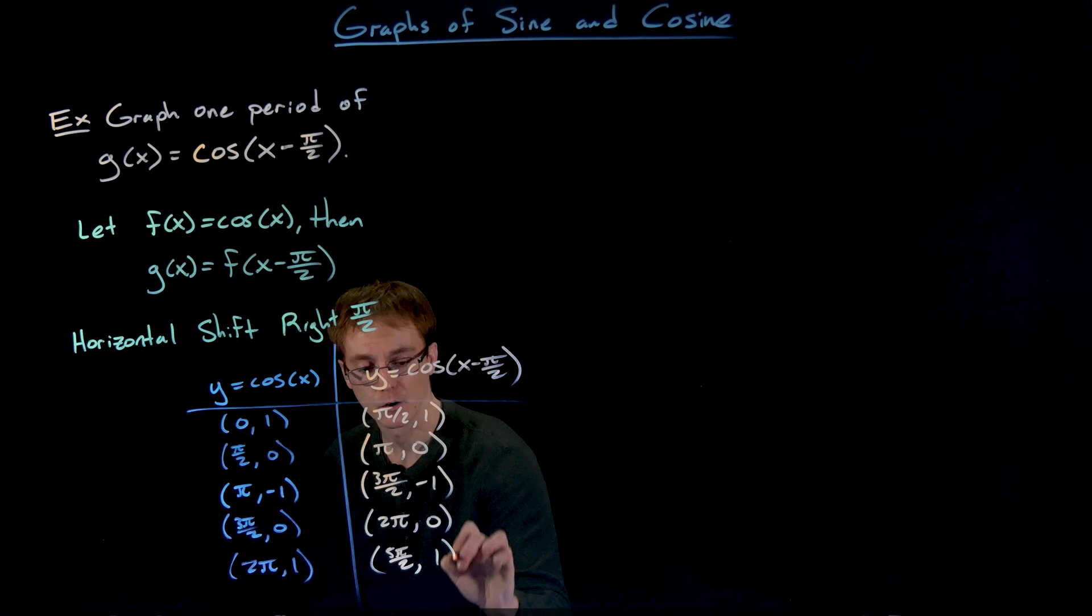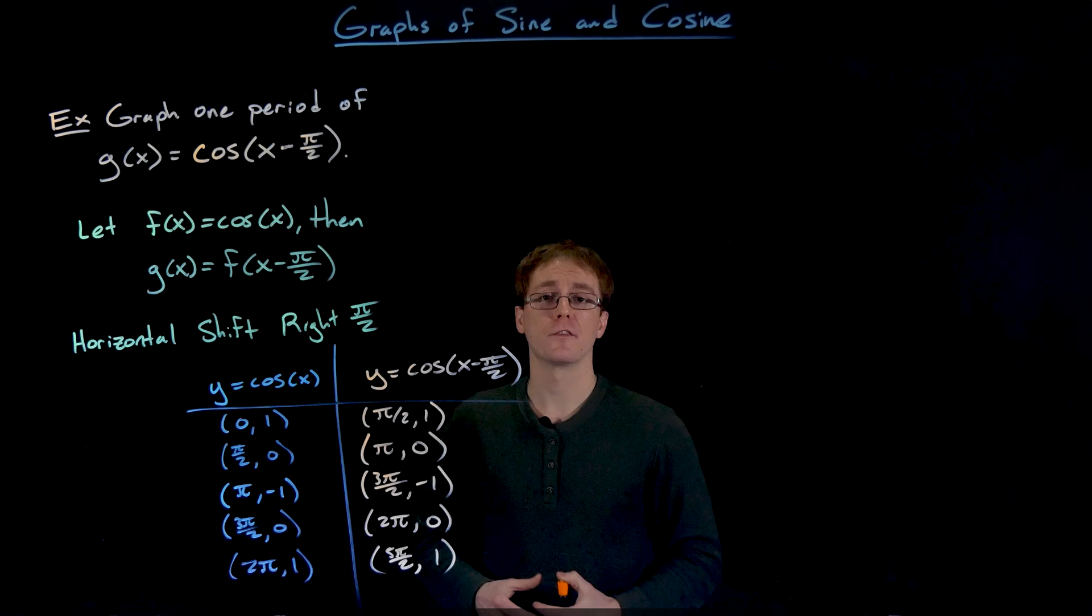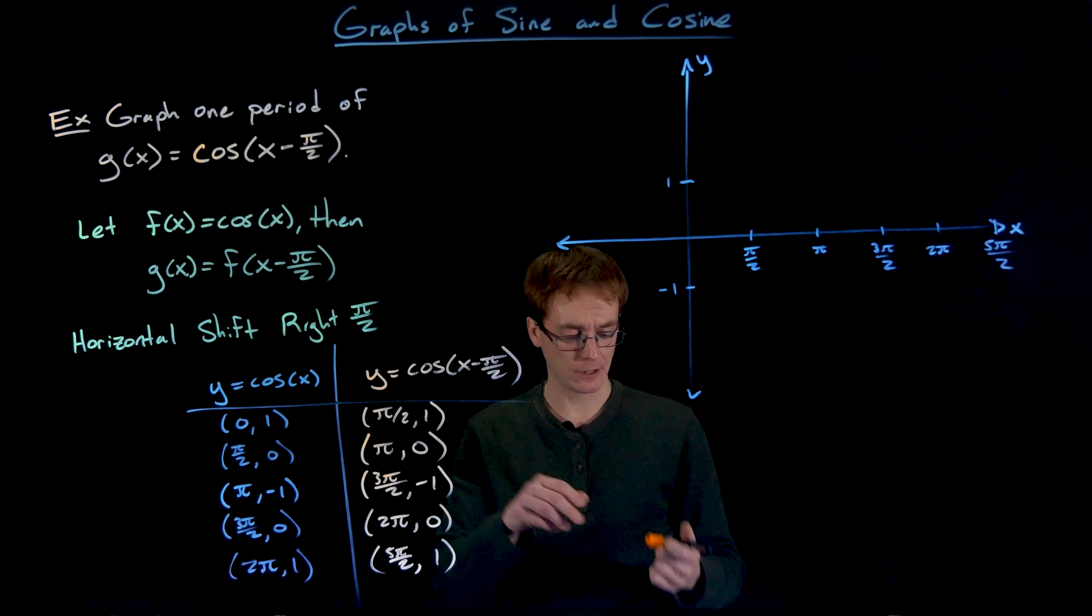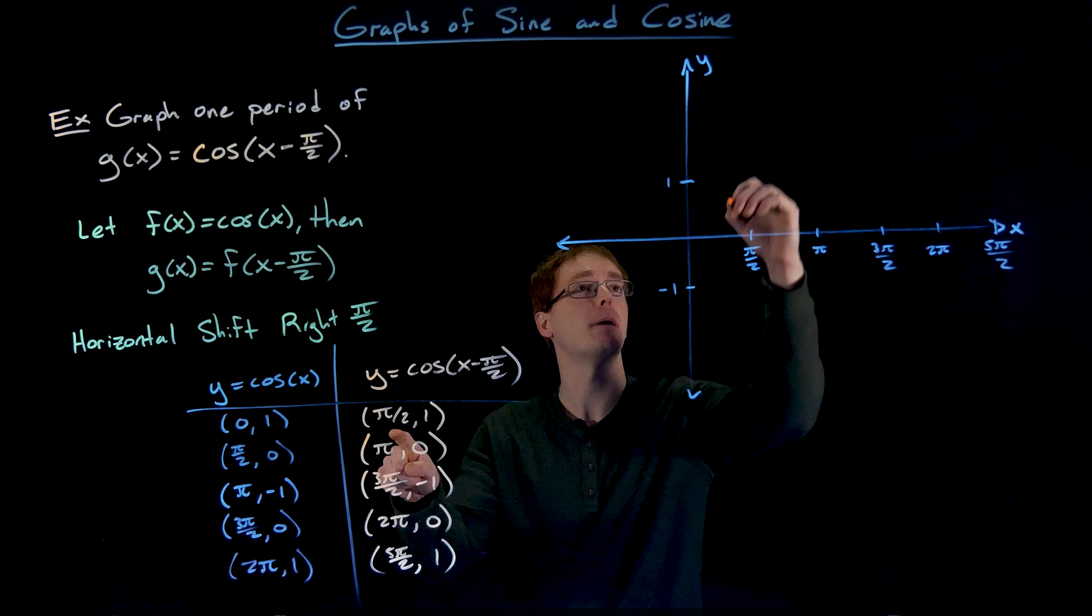Now that we have this information about points on the graph of our transformed function, we can go ahead and plot these five points on a set of axes. I went ahead and set my axes up prepared for these five points that we're going to plot. So now let's go ahead and plot our transformed cosine function in orange. Our first point is (π/2, 1).